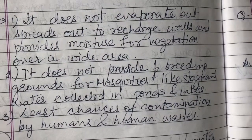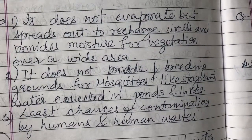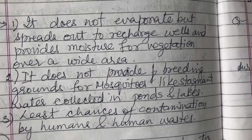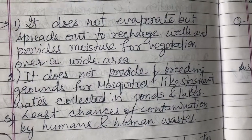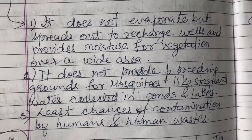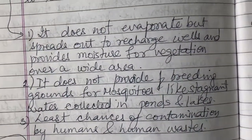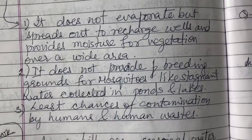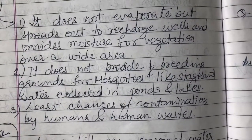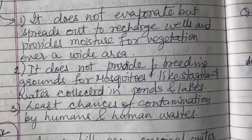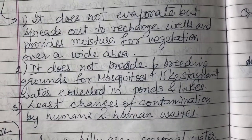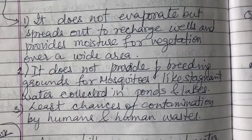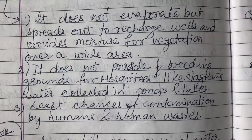What are the advantages of water stored underground versus on the surface in a tank or lake? First, it does not evaporate but spreads out to recharge wells and provide moisture for vegetation over a wide area. Second, it does not provide breeding grounds for mosquitoes like stagnant water in ponds and lakes. Third, there is the least chance of contamination by humans and animals.